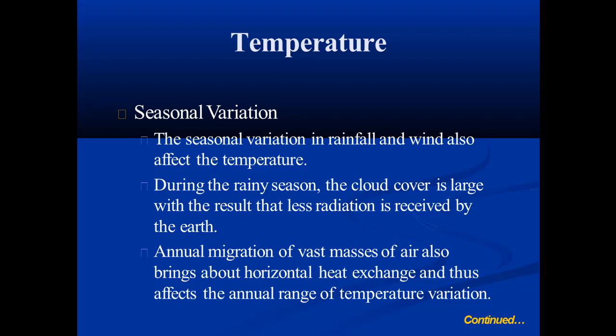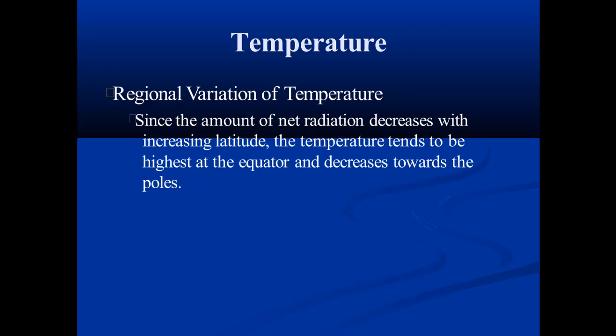Seasonal variation in rainfall and wind also affects the temperature. During the rainy season, the cloud cover is large, with the result that less radiation is received by the earth. The annual migration of vast masses of air also brings about horizontal heat exchange and thus affects the annual range of temperature variation. Since the amount of net radiation decreases with increasing latitude, the temperature tends to be highest at the equator and decreases towards the poles.